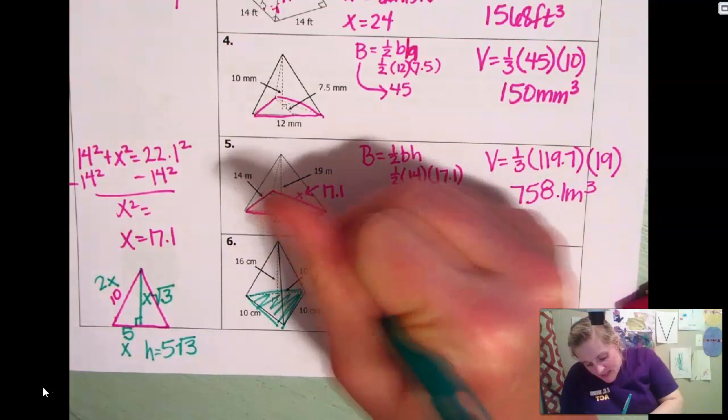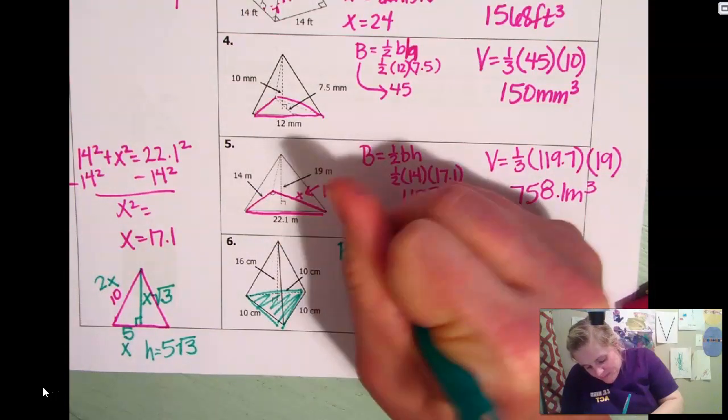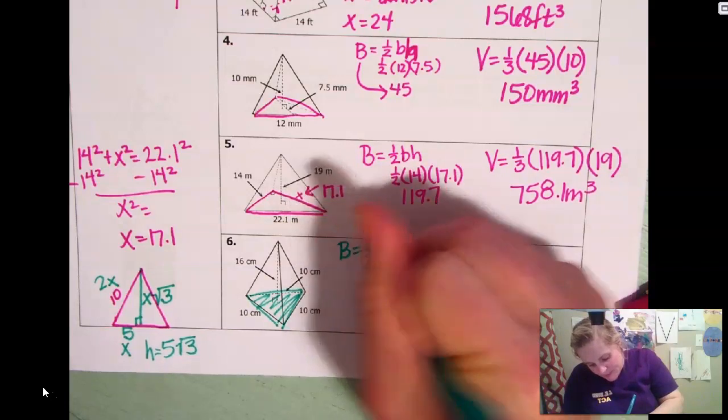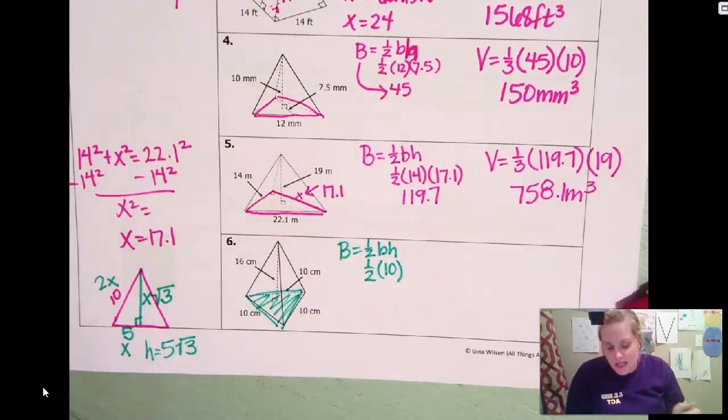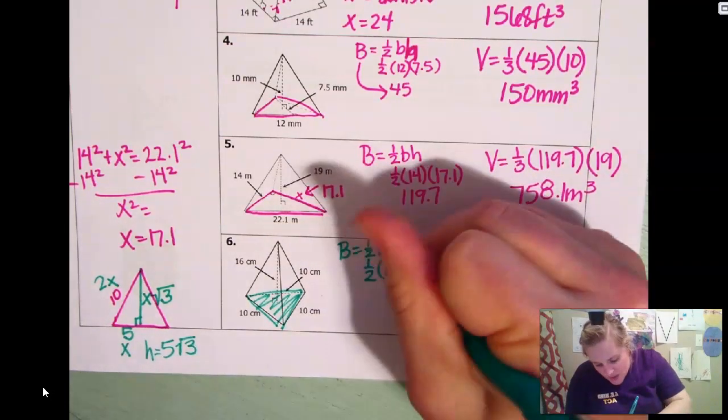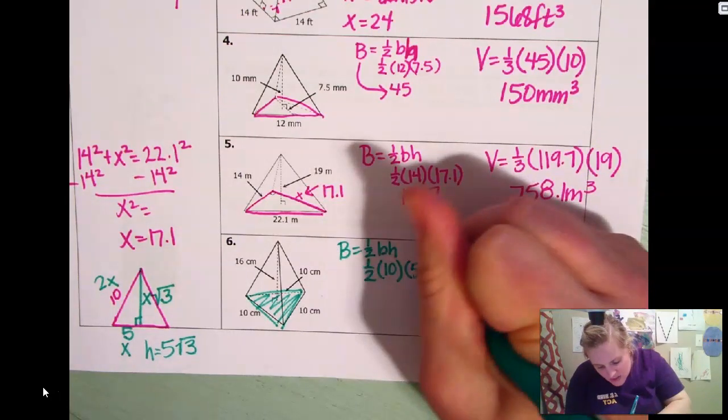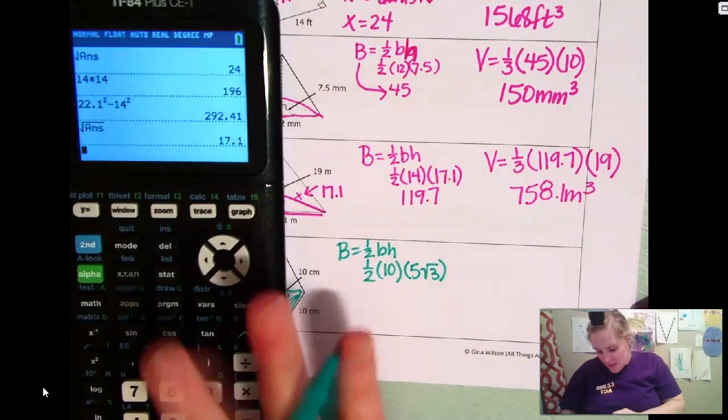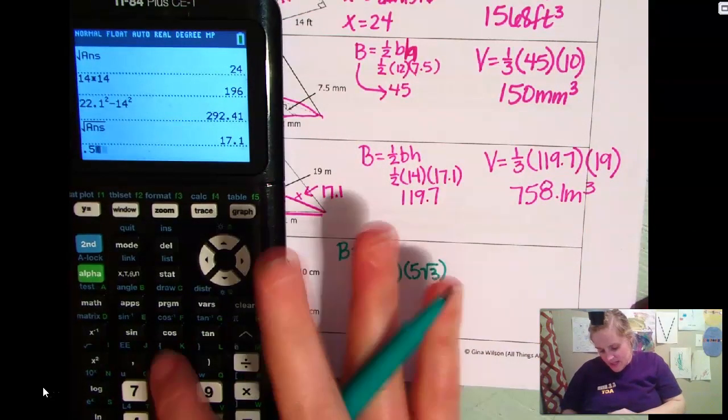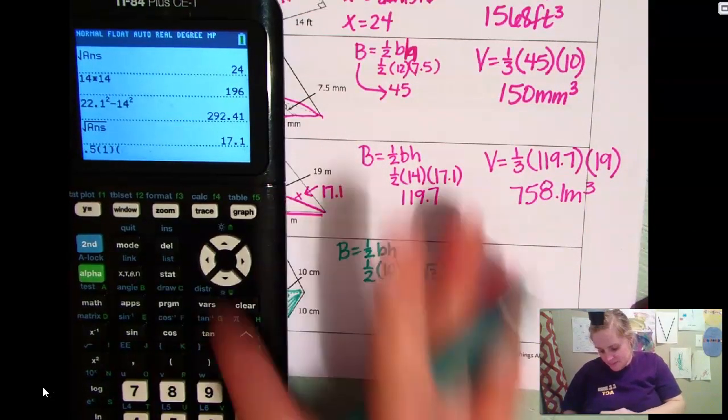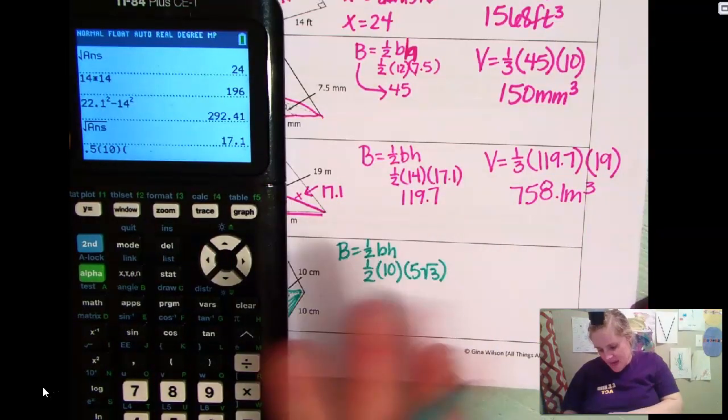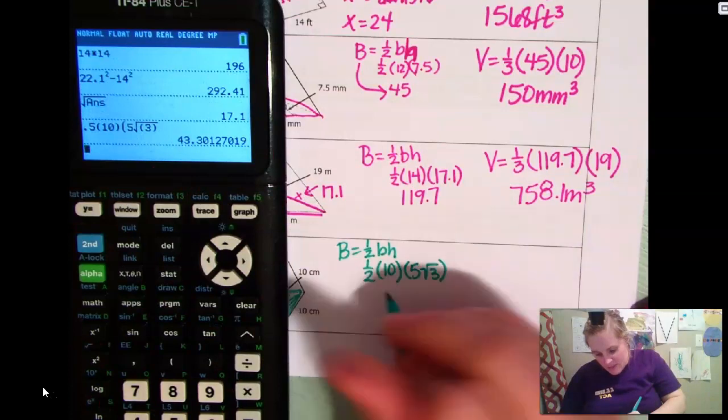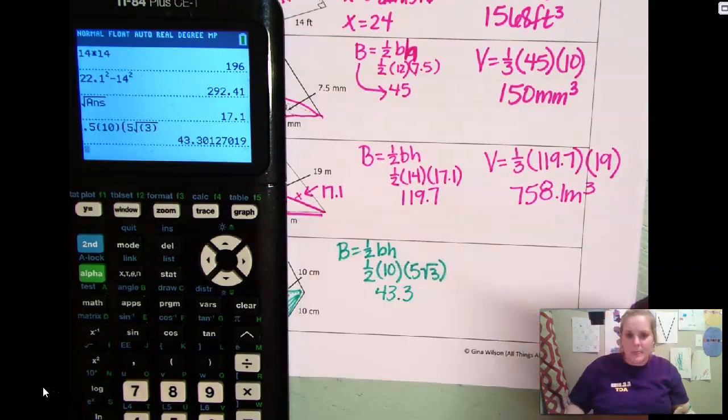So my big B is going to be one half the base and the height. So the base is going to be 10 because all sides are 10. And then the height is what we just found, 5 square roots of 3. Plug that in my calculator. 0.5 times 10. Whoops. Times 5 square roots of 3. So that is going to be 43.3. Okay?